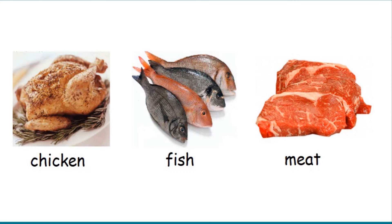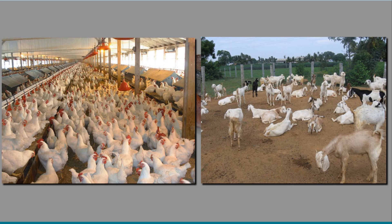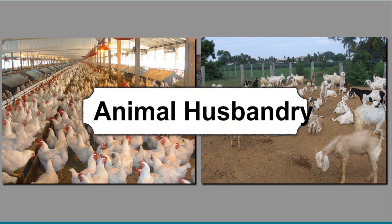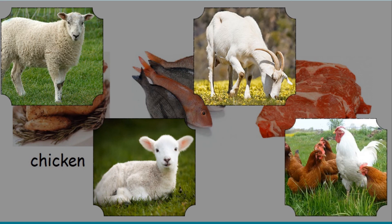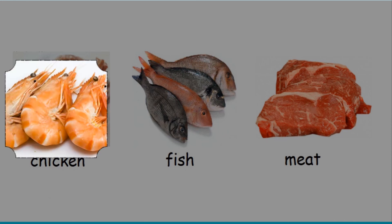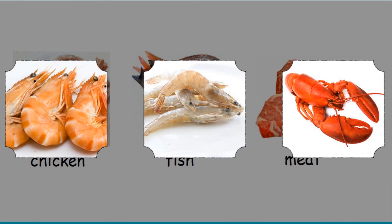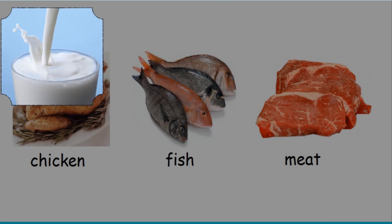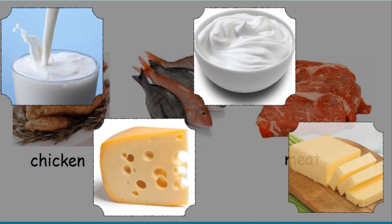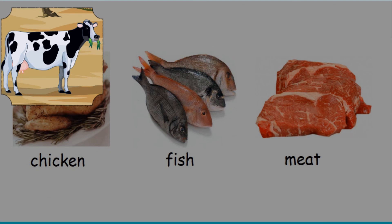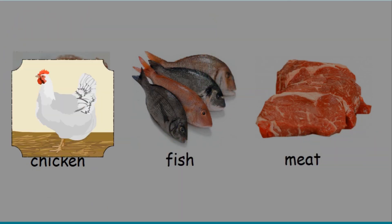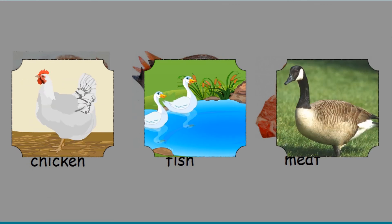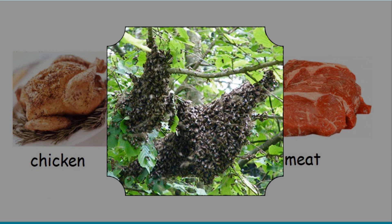Food from Animals. Rearing animals on a large scale for food and other useful products is called animal husbandry. Meat is obtained from sheep, goat, lamb, hen, etc. Fish and other water animals such as shrimps, prawns, and lobsters are also consumed by humans. Dairy products such as milk, curd, cheese, and butter are obtained from animals such as cow, buffalo, goat, camel, etc. Eggs are obtained from hen, duck, goose, etc. The practice of rearing honeybees for honey is known as apiculture.